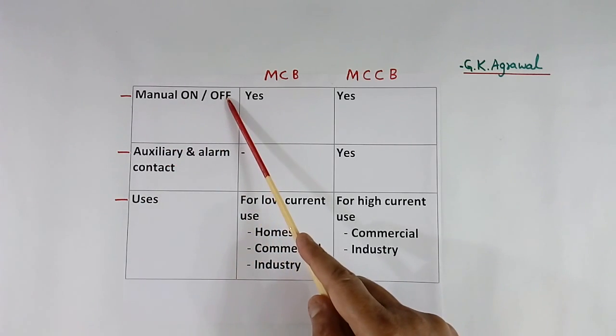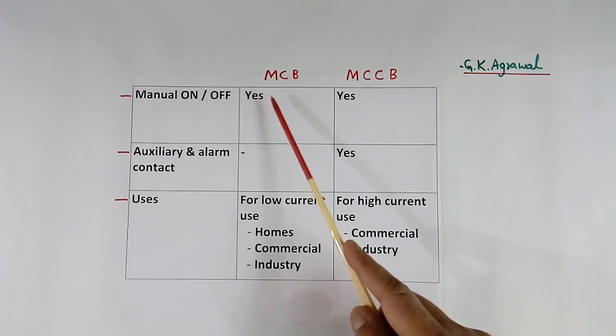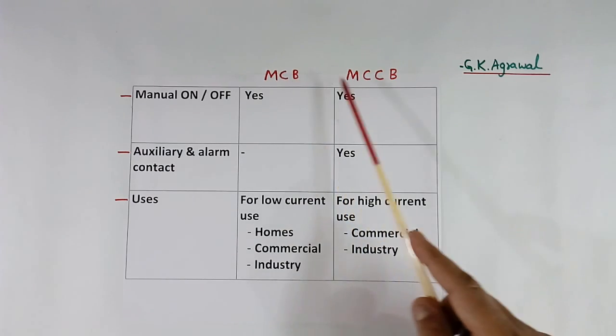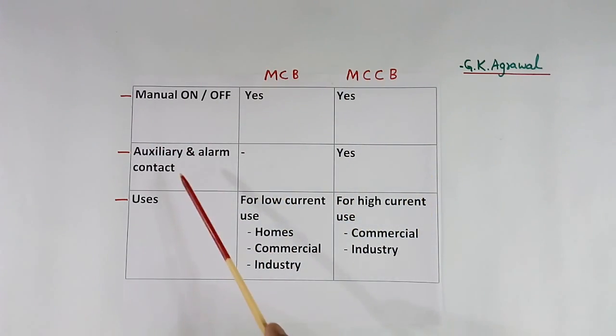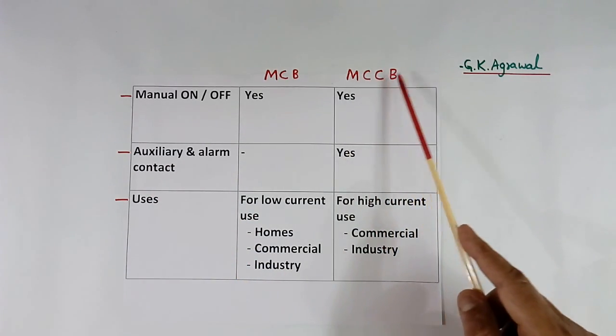Now manual on-off. This is available in both MCB and MCCB, so this is not actually a difference. Then auxiliary and alarm contact. This is available in MCCB.